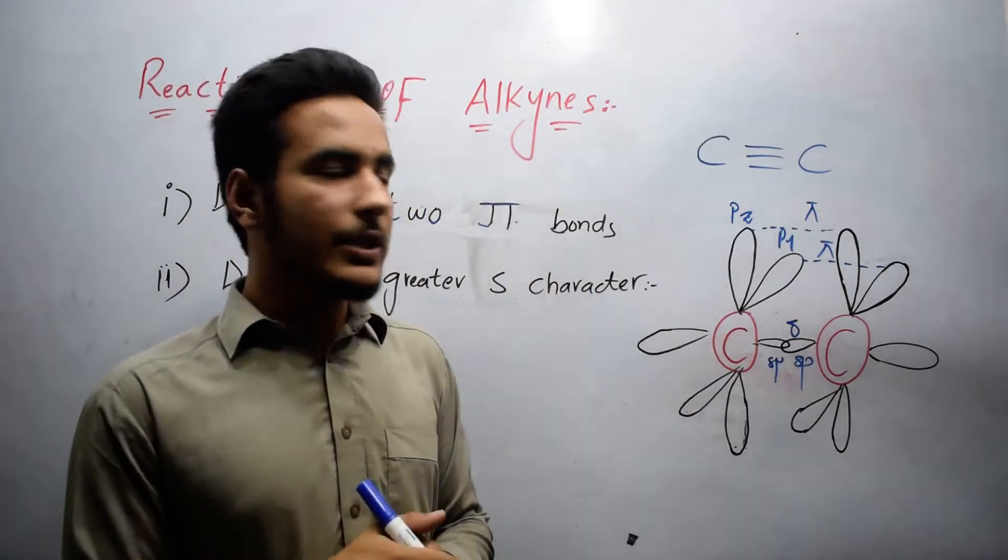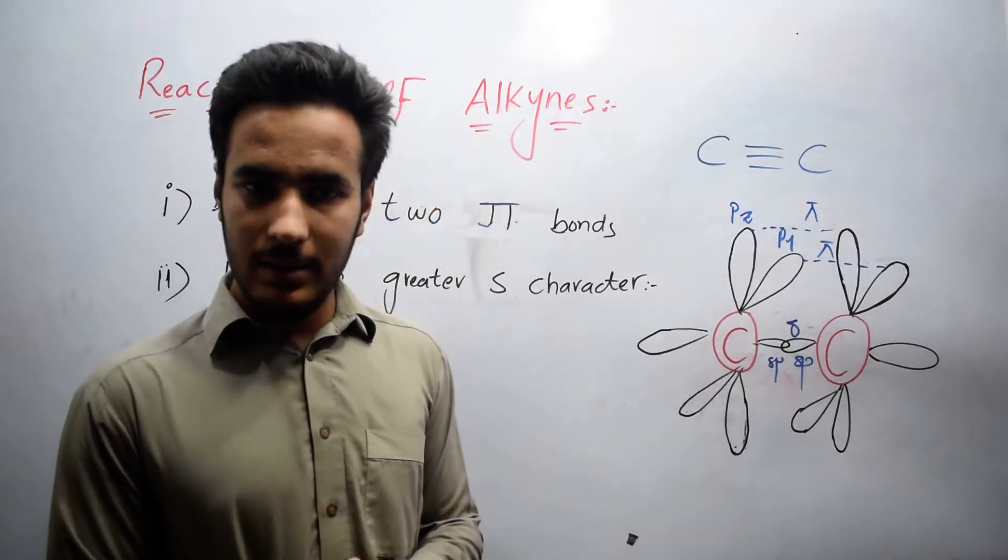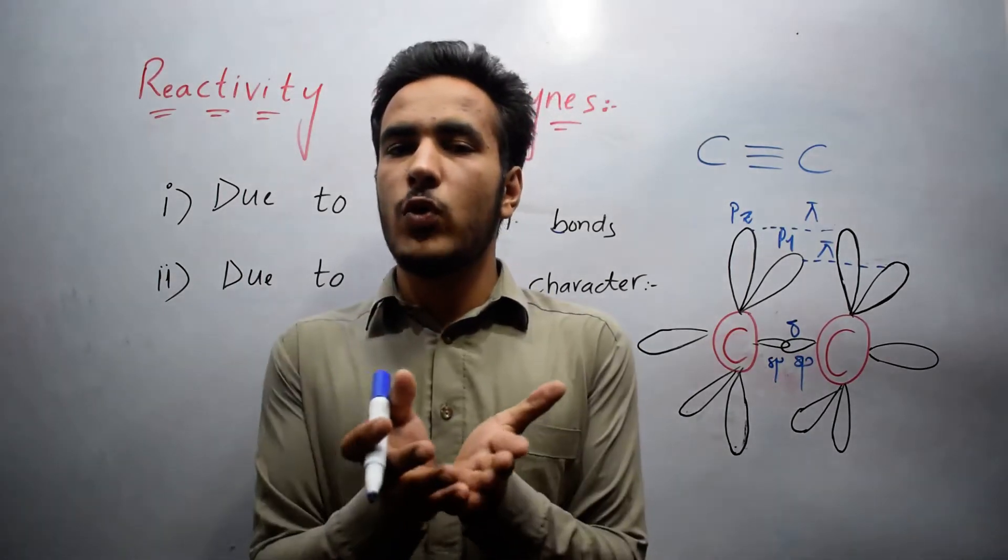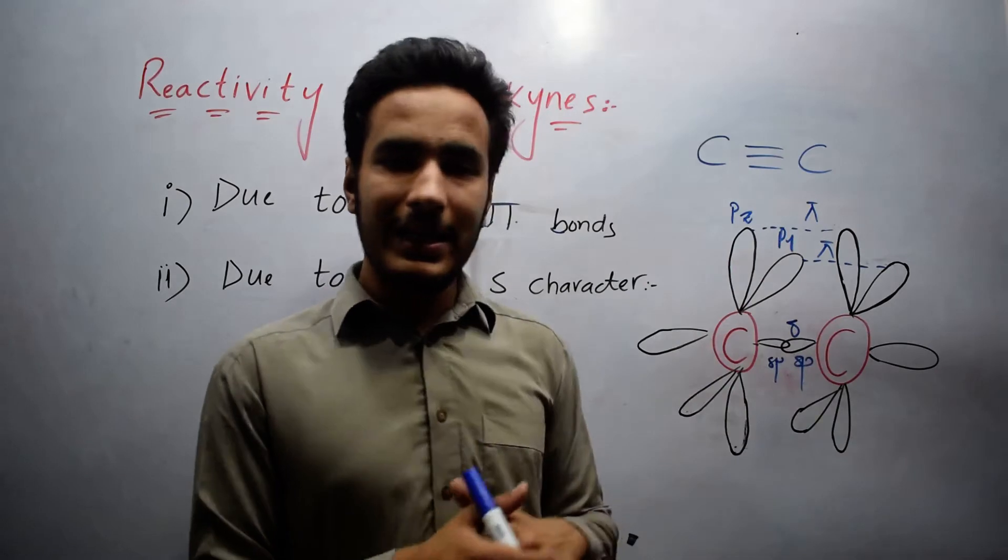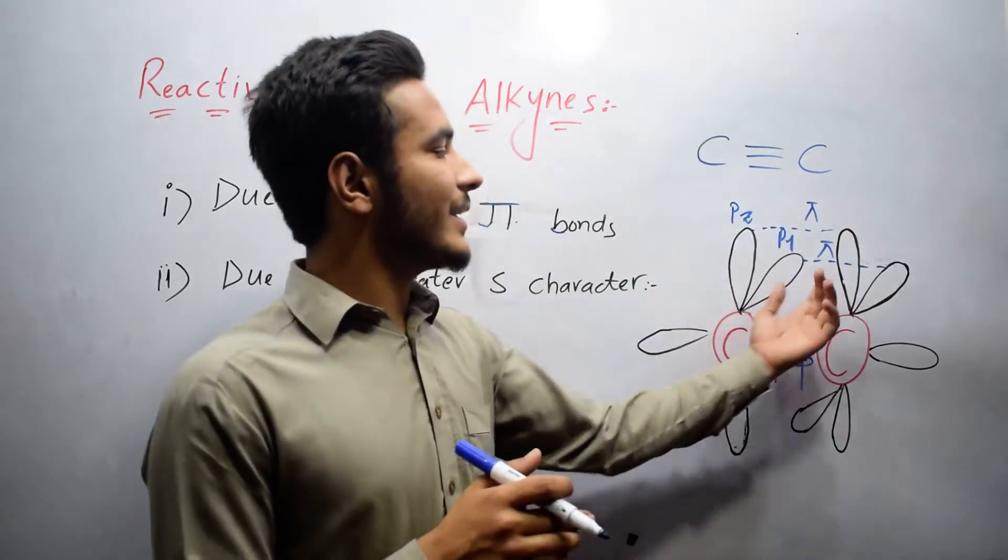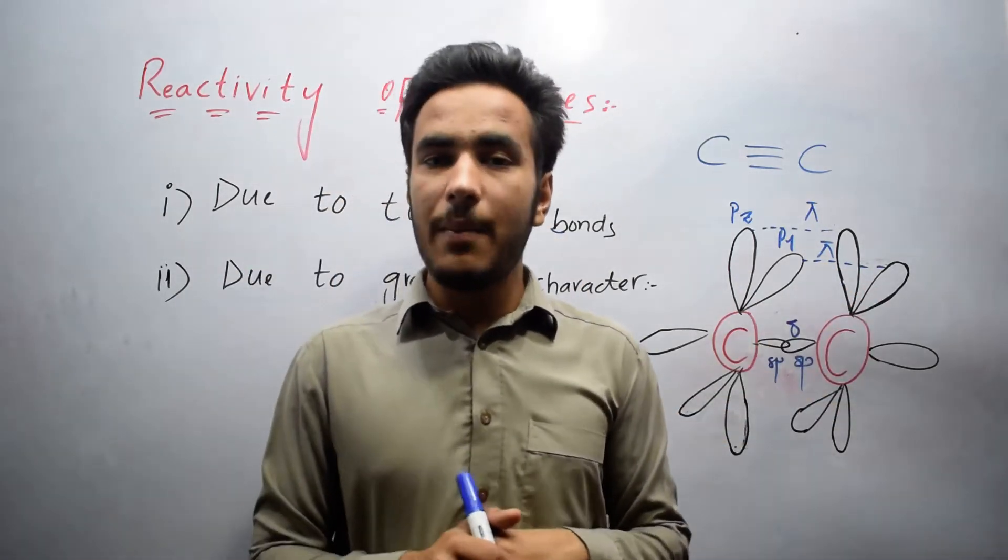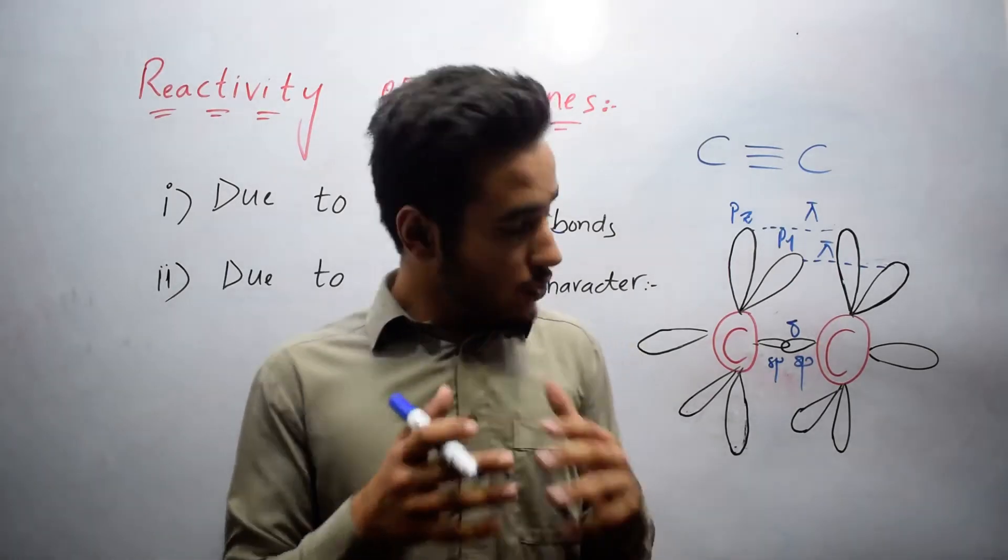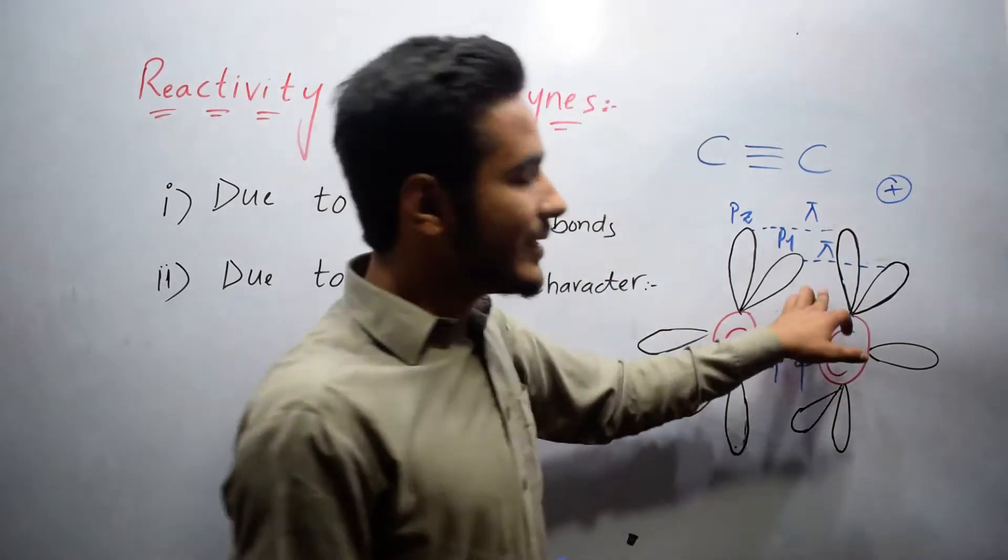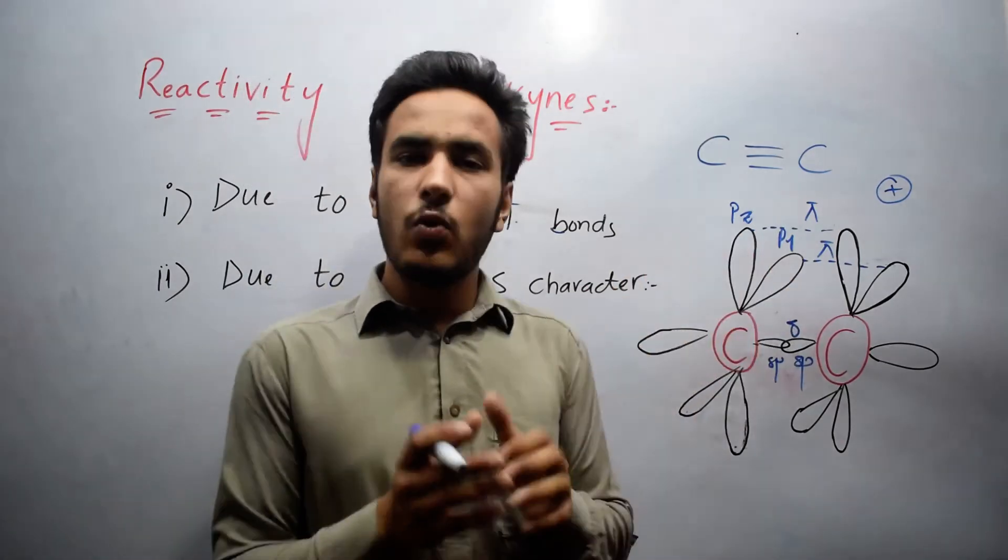While in the case of alkenes, there is only one pi bond. When there is only one pi bond, their electron cloud will be lesser as compared to alkyne, because here there are two electron clouds. The main thing is these two electron clouds merge with each other and form a big volume. So when electrophile wants to attack on this compound, here the volume is bigger, while in case of alkenes, volume is smaller.